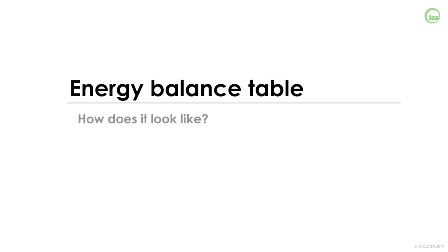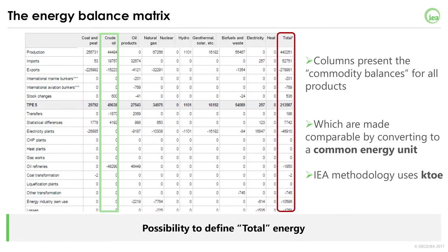Now let's have a look at the actual table and what it looks like. Here is an example of a condensed energy balance matrix. As you can see, it combines all energy products together — coal, oil, natural gas, etc. — with a column for each of them. All these energy products are arranged under the same flows or rows, and importantly they are made comparable by converting all of them to a common energy unit. That way, it is possible to define and calculate total energy for each flow, such as total energy production or total primary energy supply at the country level.